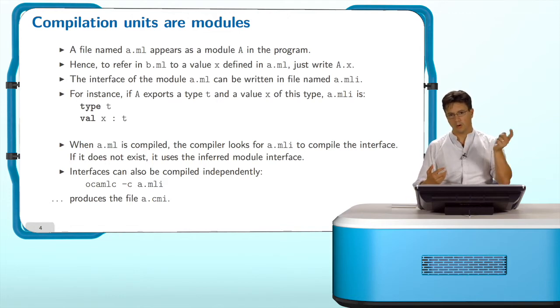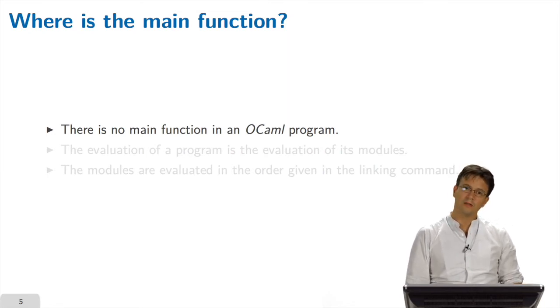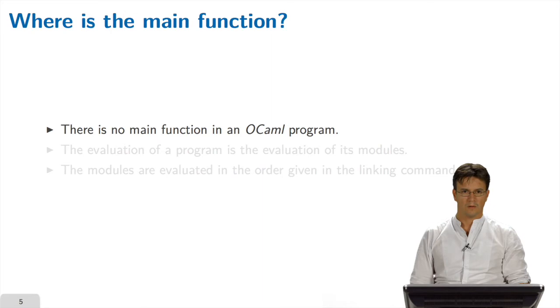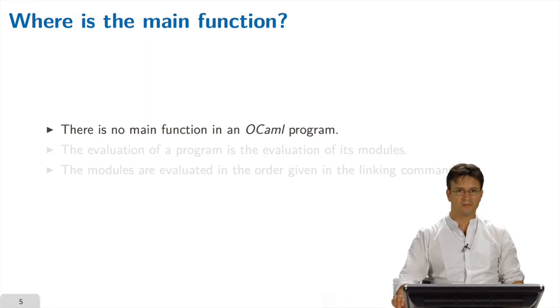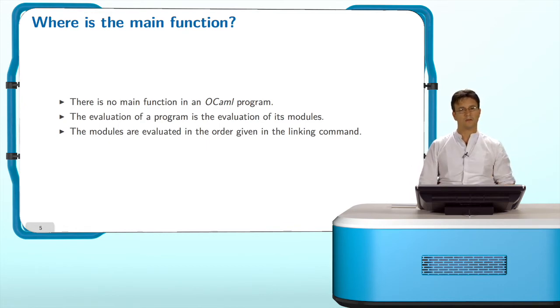You may wonder, especially if you have programmed in C or Java, what is the entry point of an OCaml program? The answer is simple. There is no such thing. There is no entry point. There is no main function in an OCaml program. The evaluation of a program is the evaluation of the modules that compose this program, and they are evaluated in the order given at link time, the order that you gave to OCamlC when you produce the executable program.